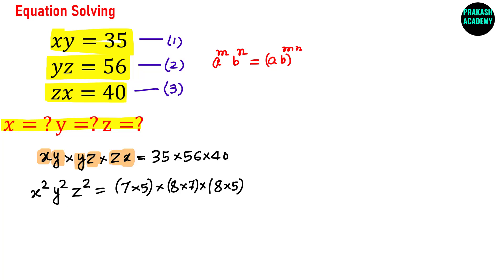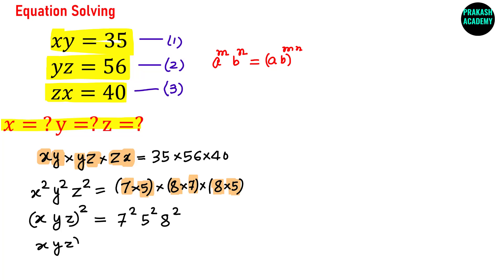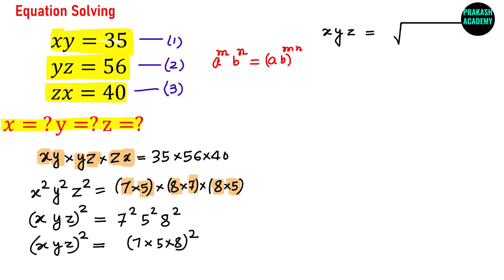Using this rule, the left-hand side can simply be written as (XYZ) whole squared. Looking at the right-hand side, we have 7², 5², and 8², which by the same rule becomes (7×5×8) raised to the power 2.